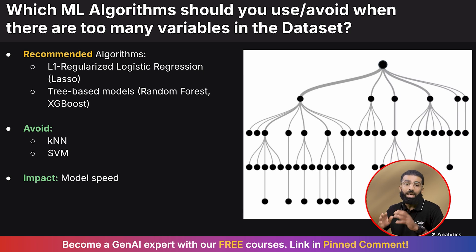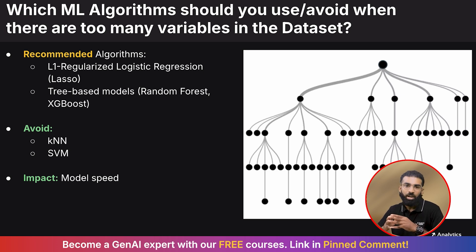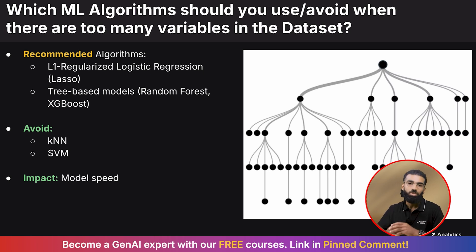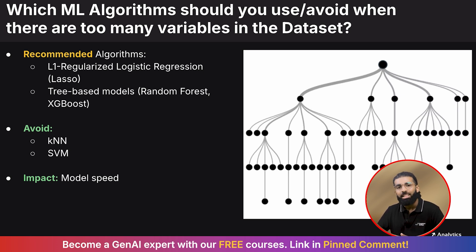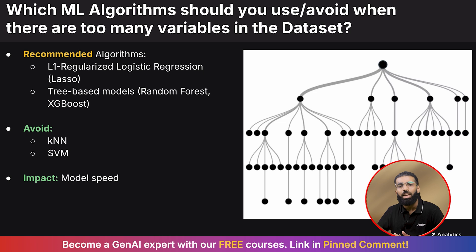Tree-based models such as random forest and XGBoost can handle irrelevant features relatively well. When it comes to algorithms to avoid, the top ones are KNN and SVM — their performance degrades when there are too many dimensions. An interviewer asks this question to check if you think before using a model, and you should be able to answer keeping in mind which model provides maximum speed.